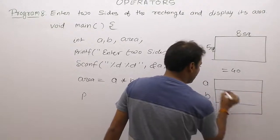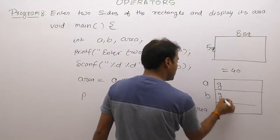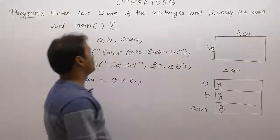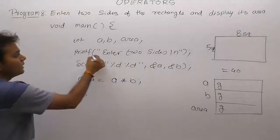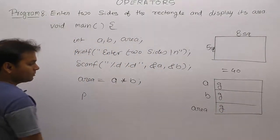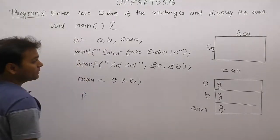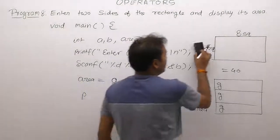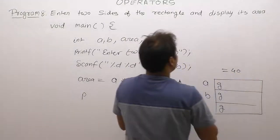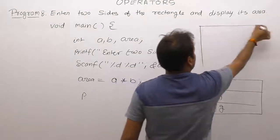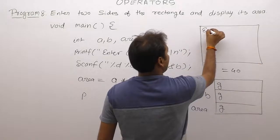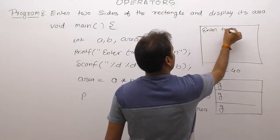Then what is the initial value. Initial value of local variable is garbage. Next. After that displaying enter two sides. Output of this program simply displays enter two sides.